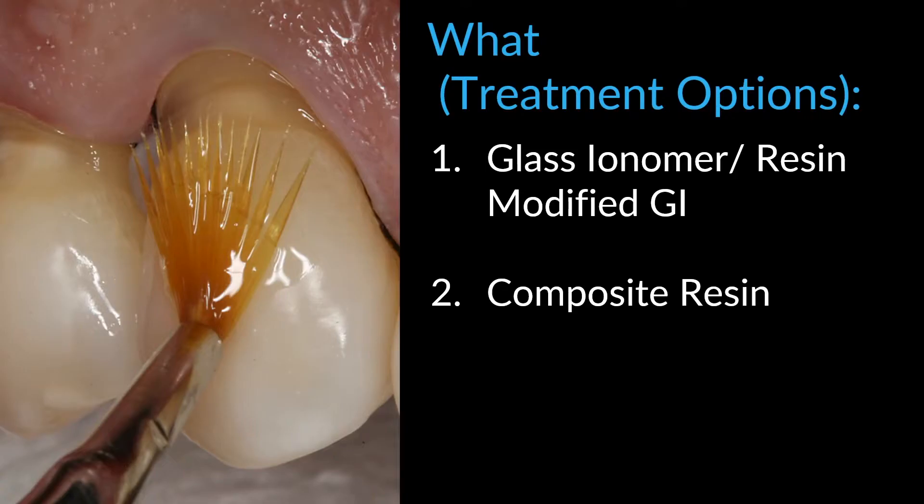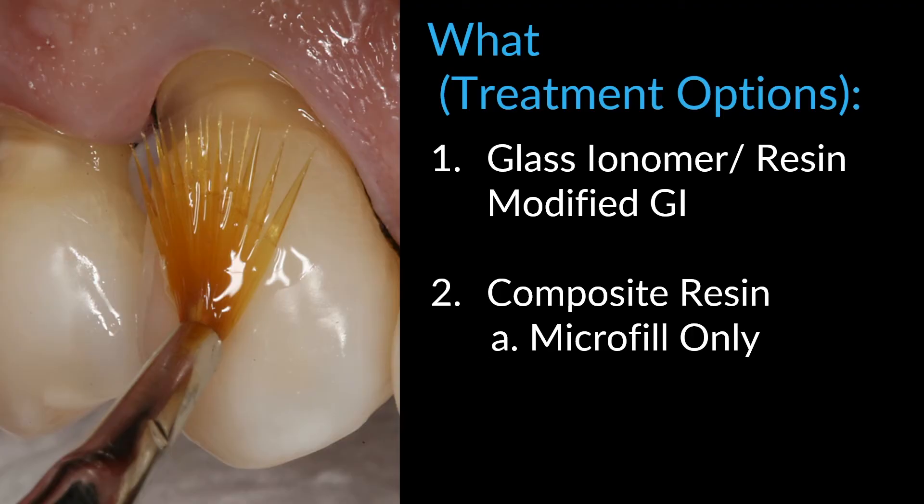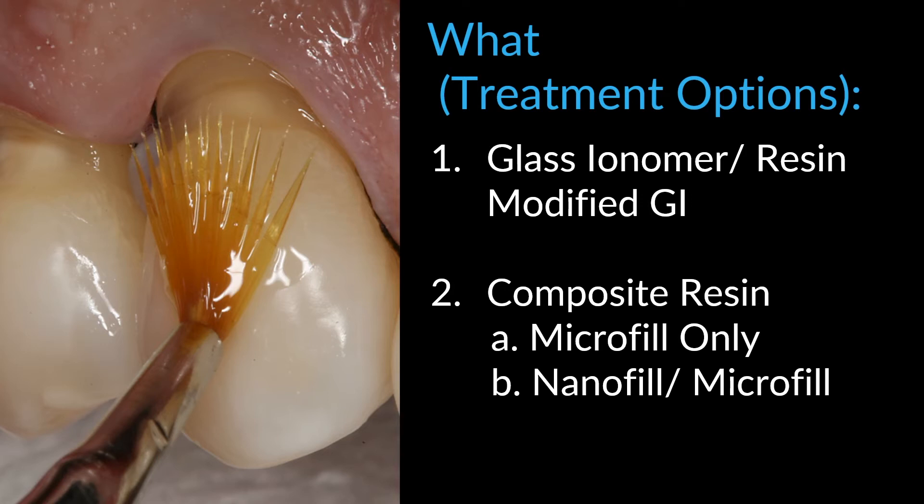Typically I'm going to be looking at some sort of composite resin to restore those areas. Your three options today are either using a micro fill only technique — which is what we're going to describe today — or for deeper lesions, using a nano fill layered with a micro fill technique, which I'll describe in just a moment.